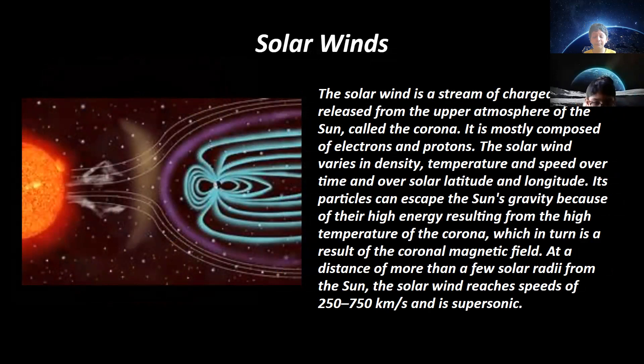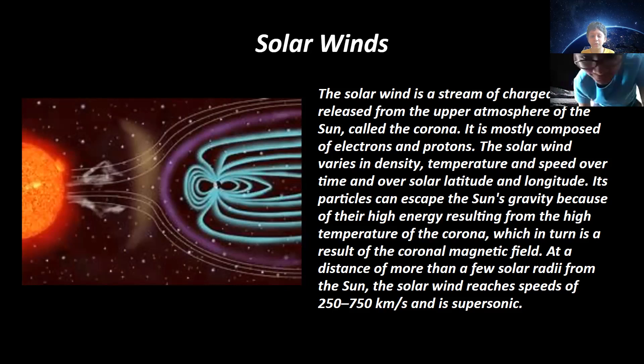Its particles can escape the sun's gravity because of their high energy resulting from the high temperature of the corona, which in turn is a result of the coronal magnetic field. At a distance of more than a few solar radii from the sun, the solar wind reaches speeds of 250 to 750 kilometers per second and is supersonic.